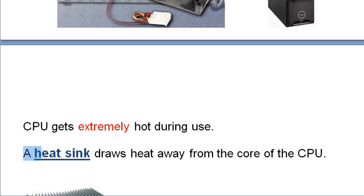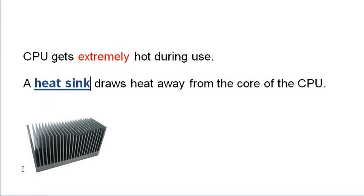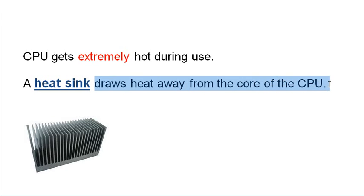The cooling system for the CPU is called a heat sink. Here's a picture of one type of heat sink design — it's a metal thing that sits on top of the CPU. The CPU gets really hot, and the heat sink absorbs most of the heat from the CPU, drawing heat away from the core.